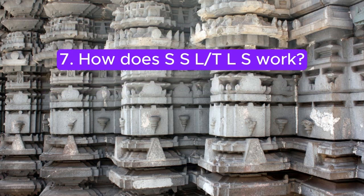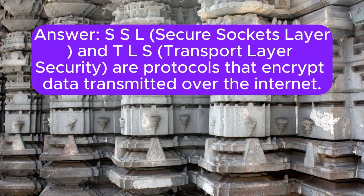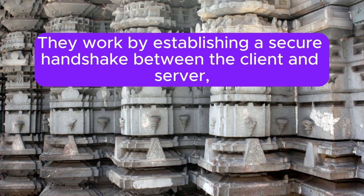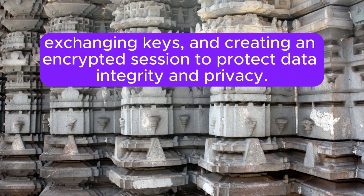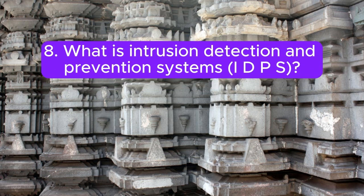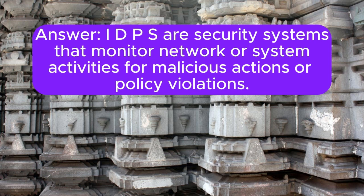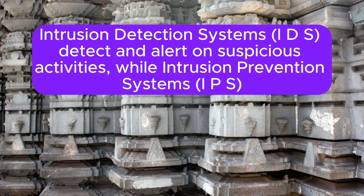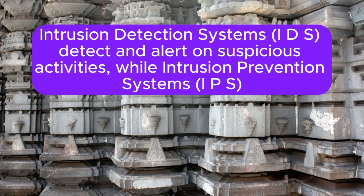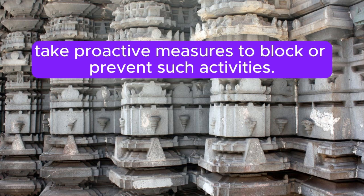Question 7: How does SSL/TLS work? SSL (Secure Sockets Layer) and TLS (Transport Layer Security) are protocols that encrypt data transmitted over the internet. They work by establishing a secure handshake between the client and server, exchanging keys, and creating an encrypted session to protect data integrity and privacy. Question 8: What is an Intrusion Detection and Prevention System (IDPS)? IDPS are security systems that monitor network or system activities for malicious actions or policy violations. Intrusion Detection Systems (IDS) detect and alert on suspicious activities, while Intrusion Prevention Systems (IPS) take proactive measures to block or prevent such activities.